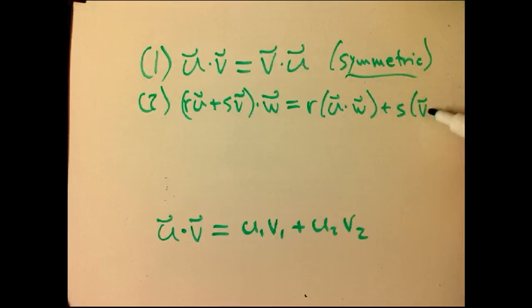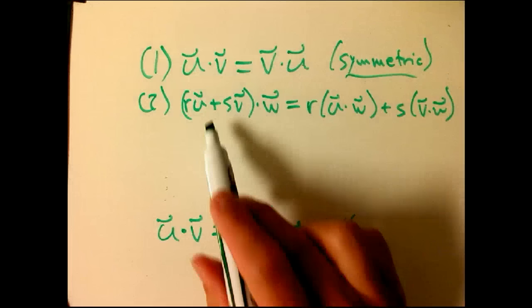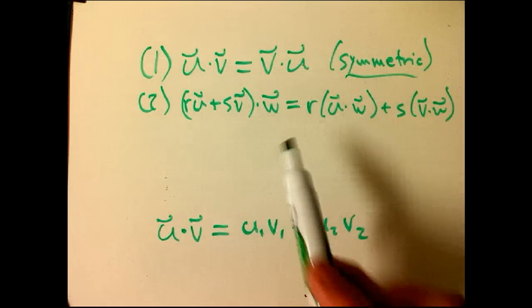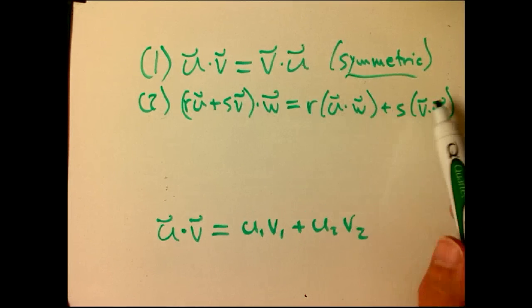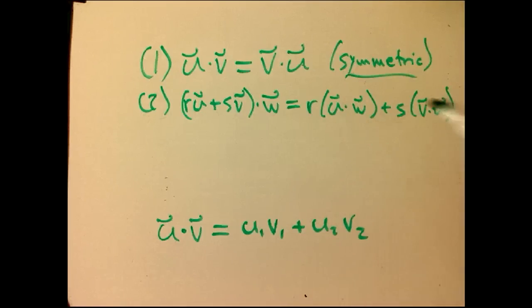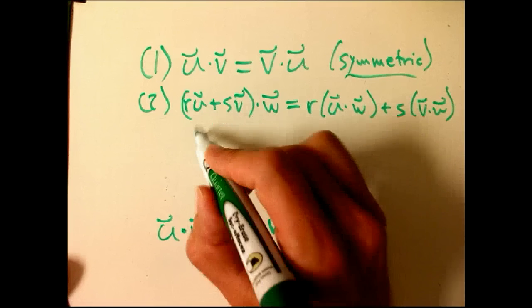then the sum comes out of the product, that's like a distributivity law, and the scalars come out, that's kind of like an associativity law, sort of. So that's called bilinearity.